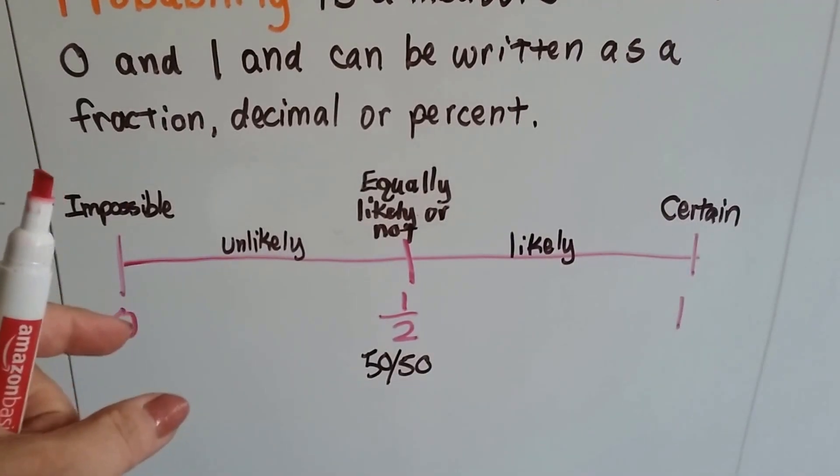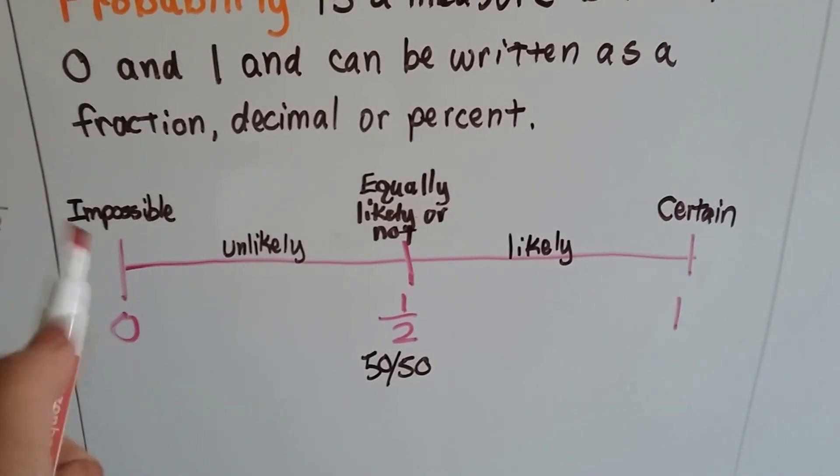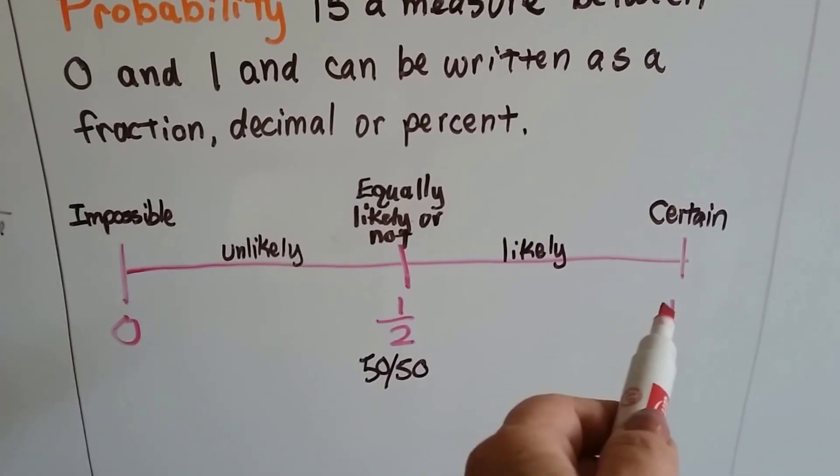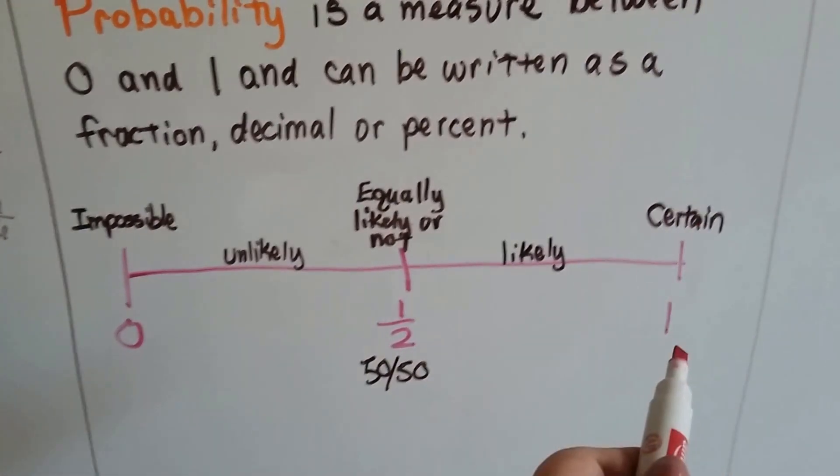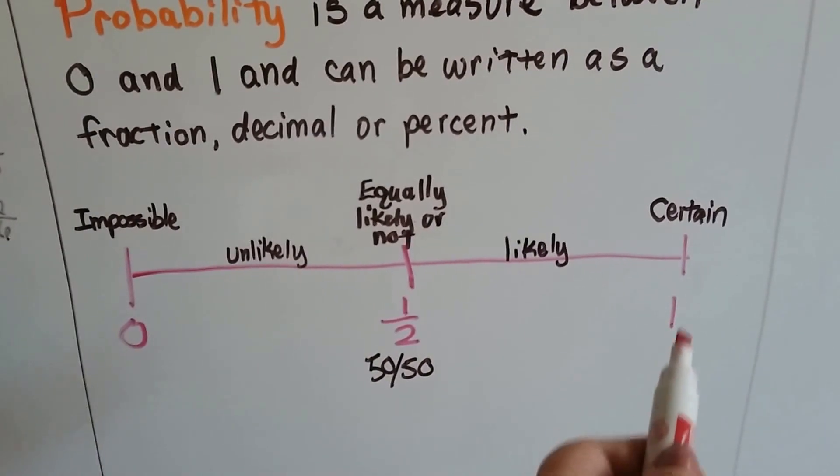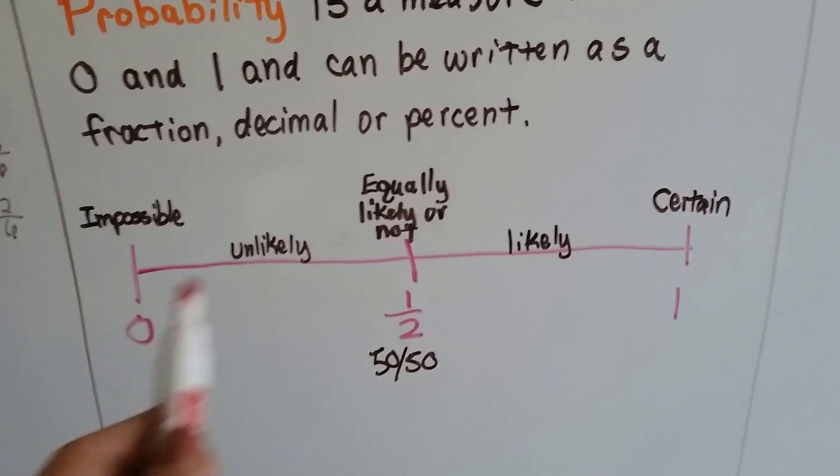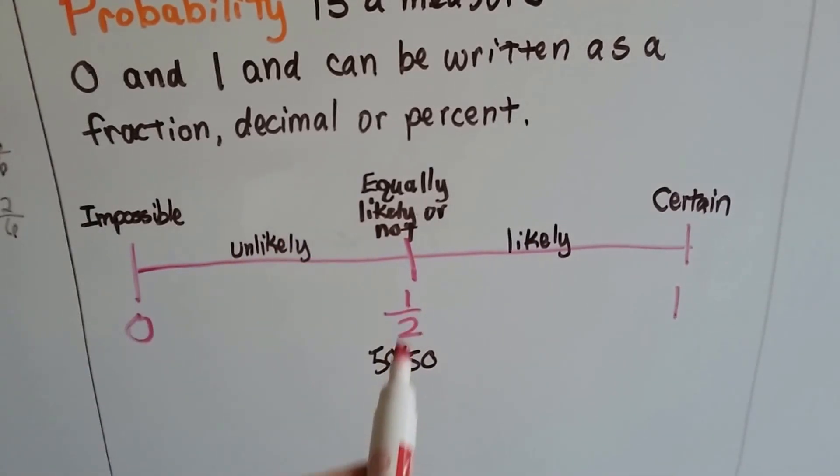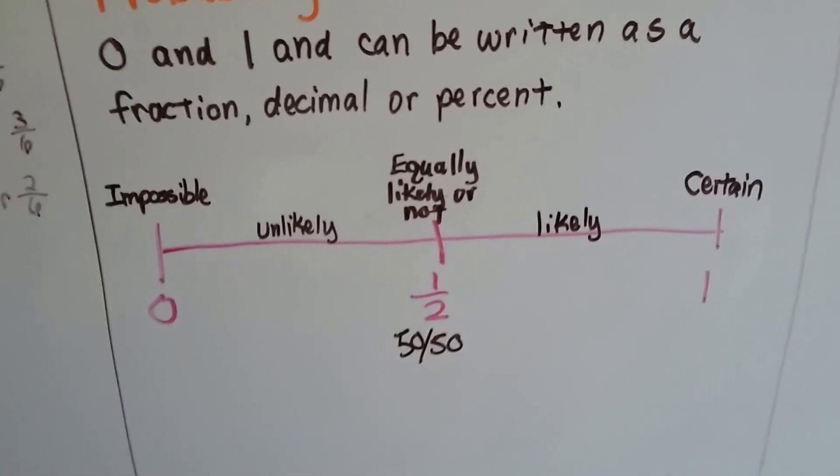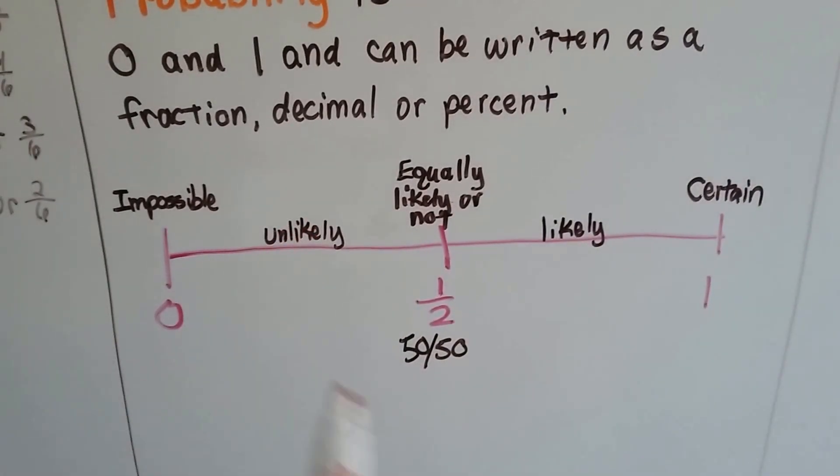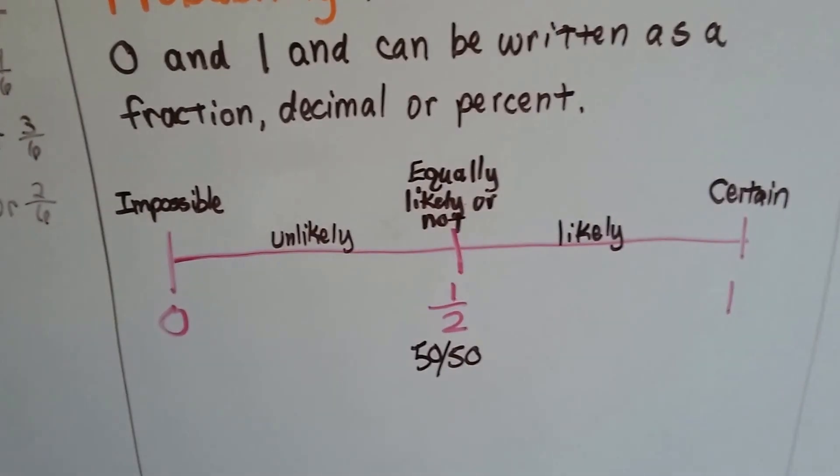If we have one die with numbers one, two, three, four, five, six, we can't roll an eight. That would be impossible. There's not even an eight on there. And if it's certain to happen, it's a one. So it's almost like that's 100%, and that's zero percent, and that's 50. But they use zero to one, and that's half for 50-50. And then unlikely is in between here, and likely is between here.